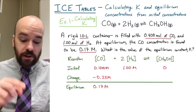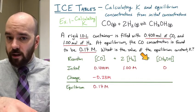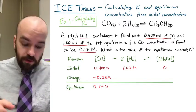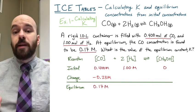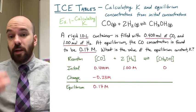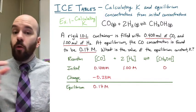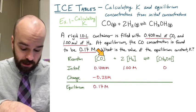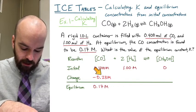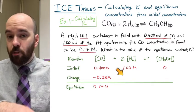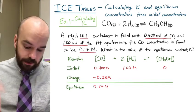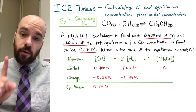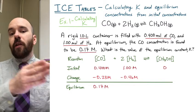That should make sense in context — if we start with only reactants and no products, the reactants have to be used up, giving a negative change. Once you know one value in the change row, you can fill in the whole rest of the change row by following the coefficients of the balanced reaction. For every one carbon monoxide molecule used up, two hydrogen molecules are used up, so the change in hydrogen is twice that: negative 0.23 times 2 equals negative 0.46 molar.